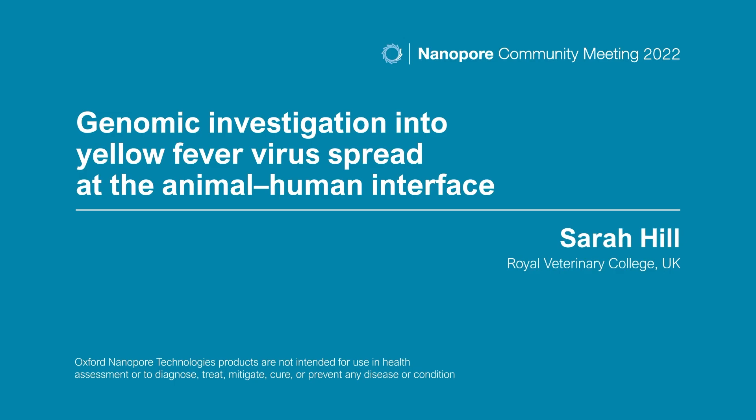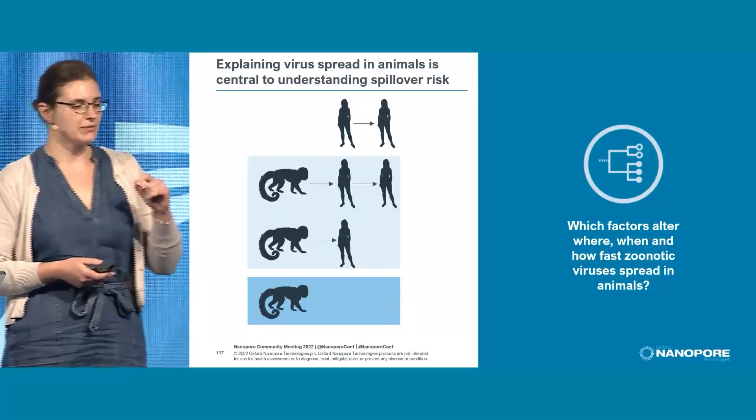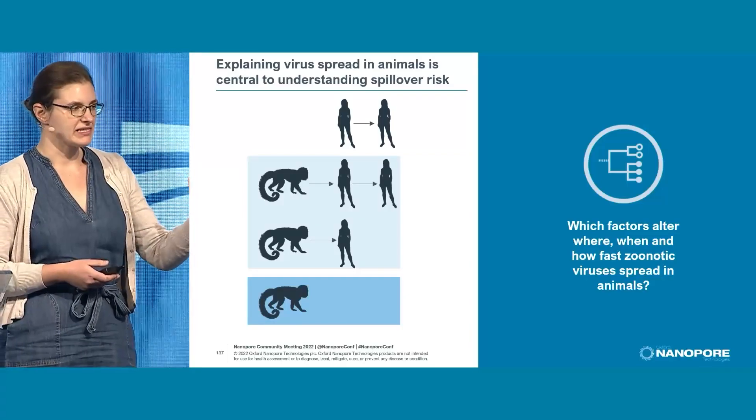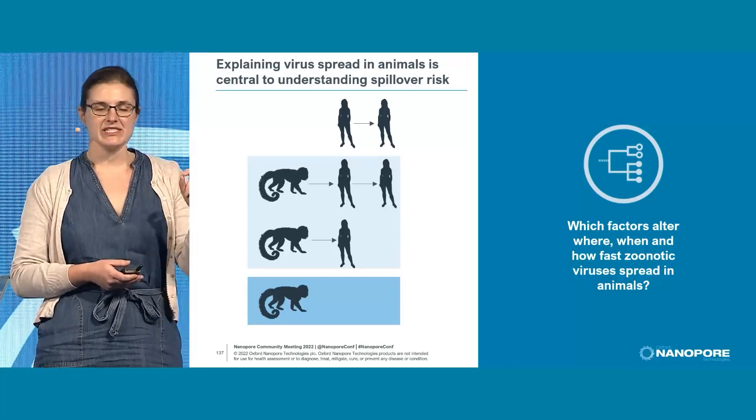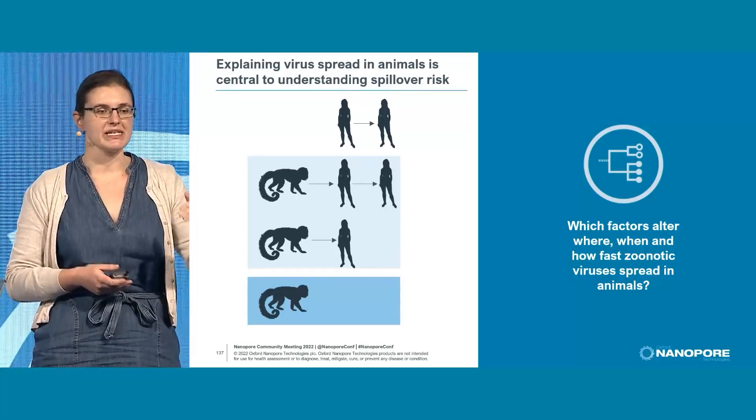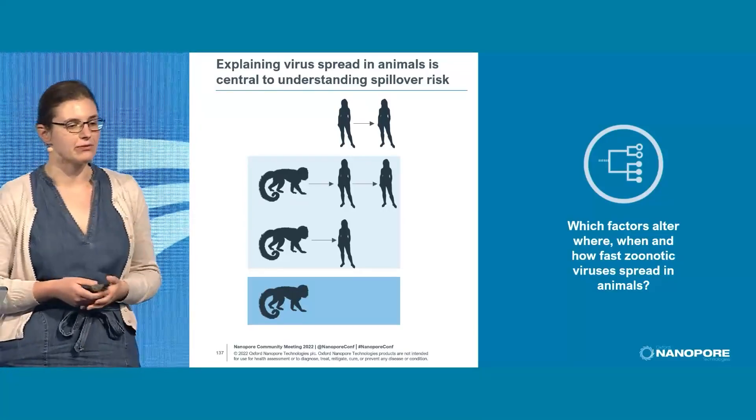Thank you everyone, it's brilliant to be here today. Every year globally, zoonotic pathogens cause billions of cases of illness and millions of deaths in humans. Of those zoonotic pathogens, emerging zoonotic viruses are most likely to cause explosive outbreaks of severe disease. So how do we reduce the harm associated with those pathogens?